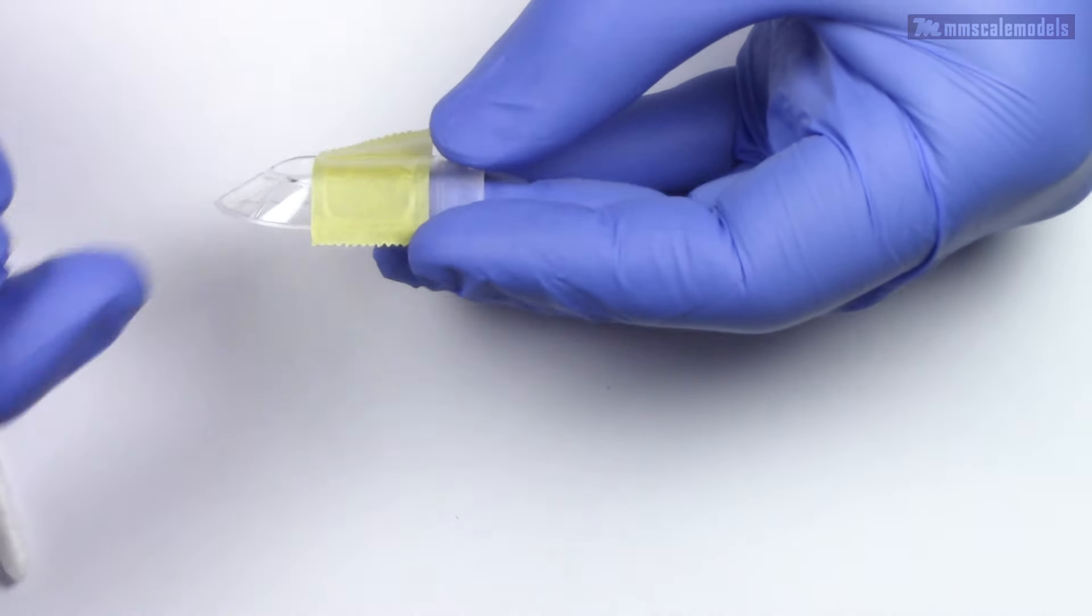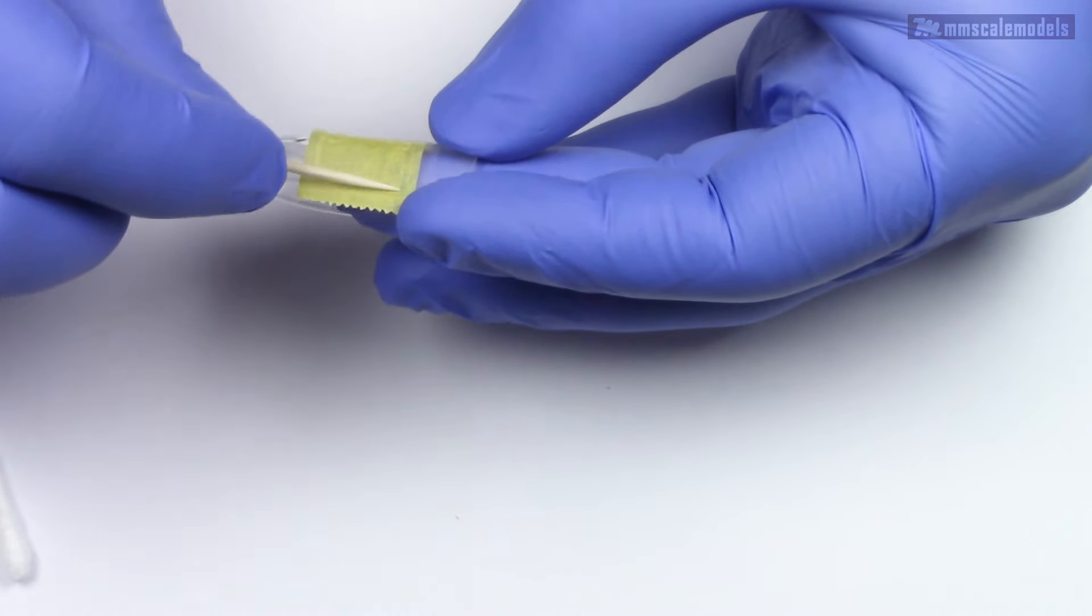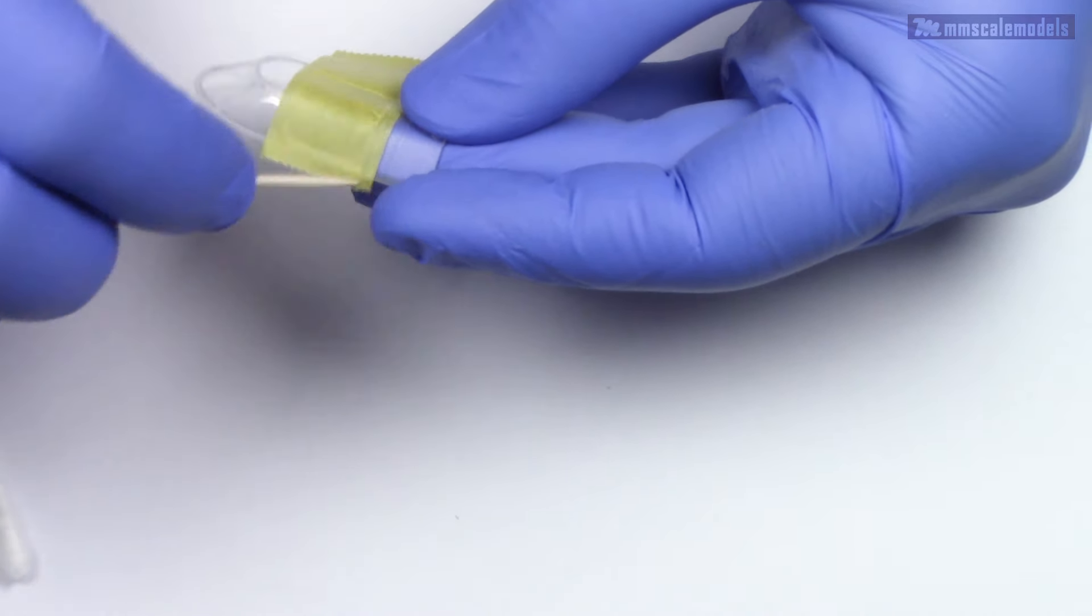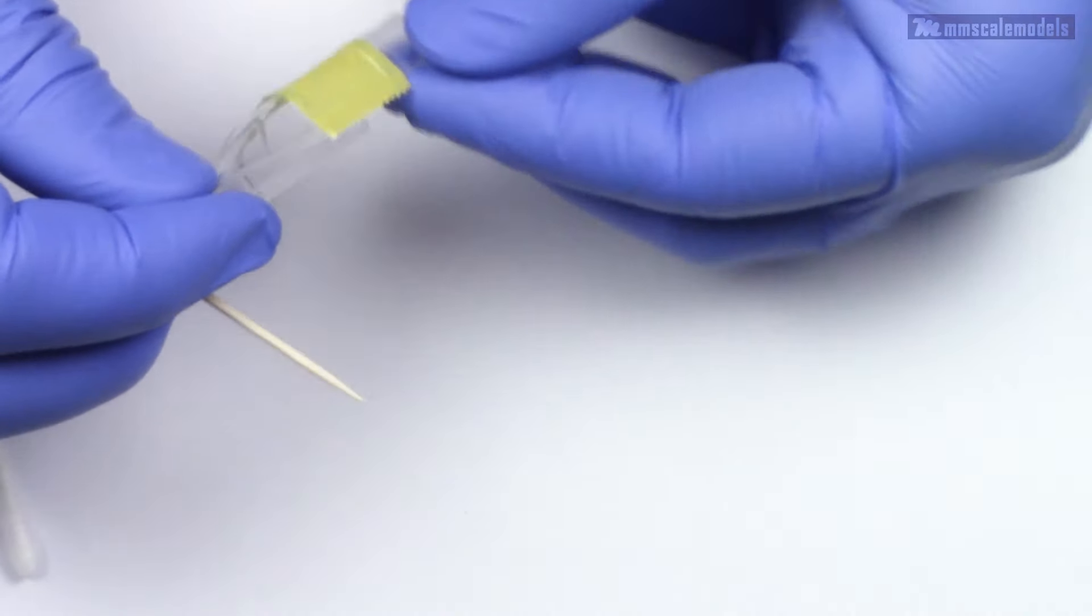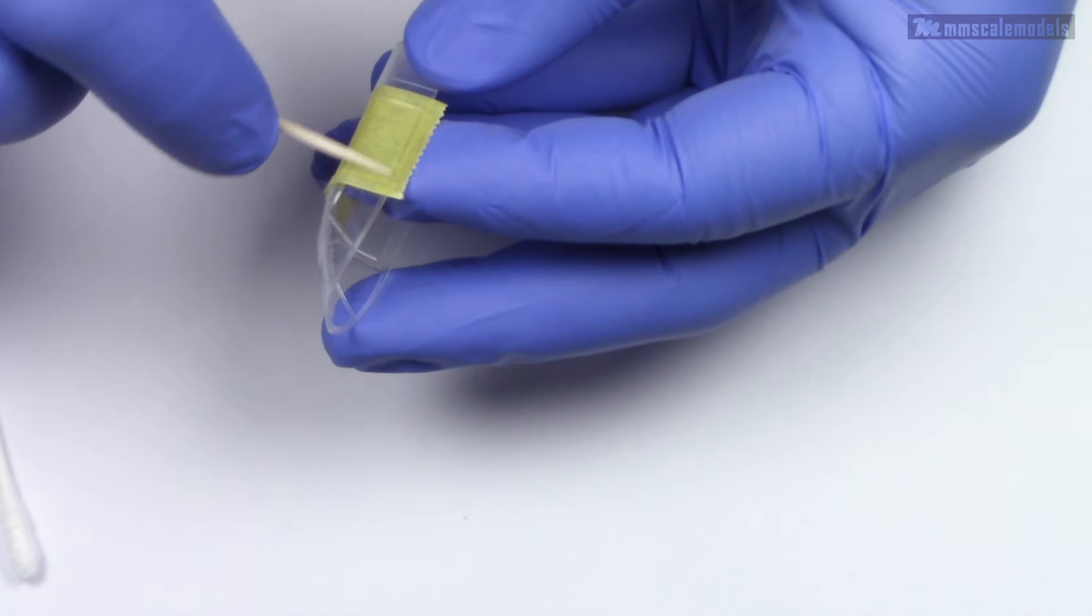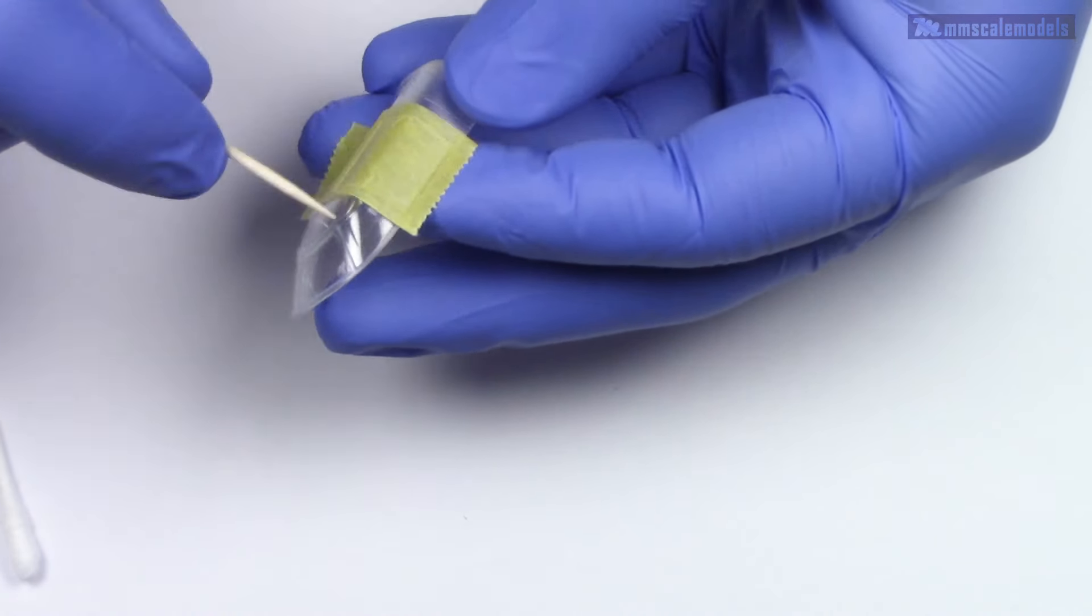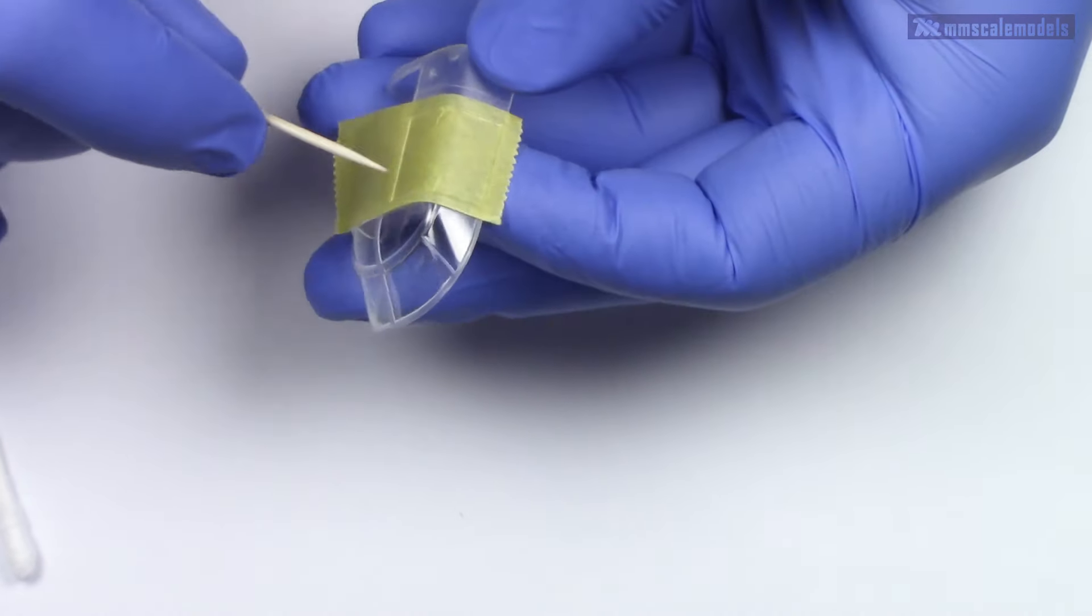To burnish down the corners I will use a toothpick. Again, due to the limitations of the masking tape, it is very easy to tear it while burnishing down the edges. And here comes another downside.